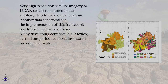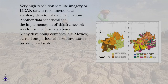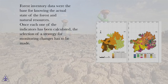Very high-resolution satellite imagery or LiDAR data is recommended as auxiliary data to validate calculations. Another dataset crucial for the implementation of this framework was forest inventory databases. Many developing countries, for example Mexico, carried out periodical forest inventories on a regional scale. Forest inventory data were the base for knowing the actual state of the forest and natural resources.